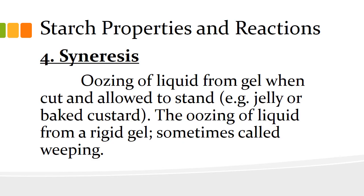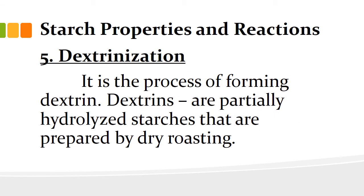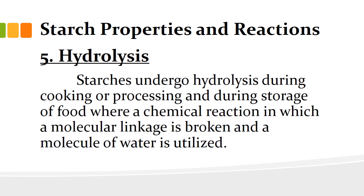Number five, we have dextrinization. The best example is when preparing brown sauce or gravy, where flour — an example of starch — is toasted or pan-fried first without any fat or liquid content. When it becomes brown, the process is called dextrinization. Next is hydrolysis, which is promoted by prolonged heating of starch with acid. This can happen when cooking an acidic food such as pineapple pie, resulting in reduced viscosity or firmness of the pie filling.